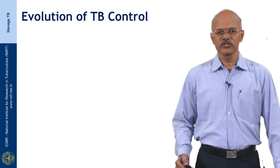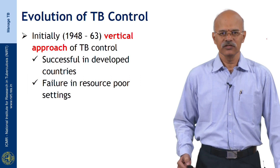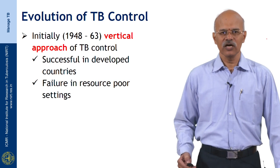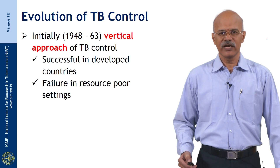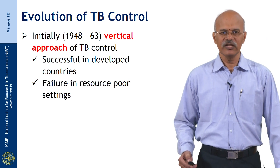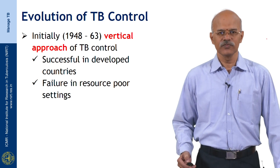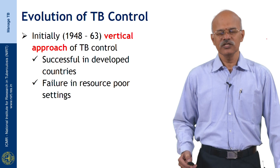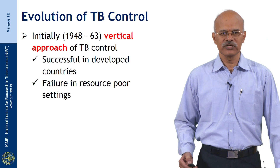When we look at the evolution of tuberculosis control over a period of a century, initially the vertical approach for TB control was practiced. This is where TB control program managers were dealing with TB patients directly. This was successful in developed countries but was a failure in many resource-poor settings.